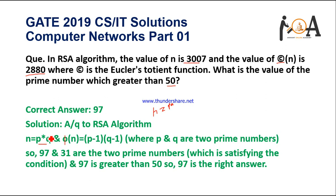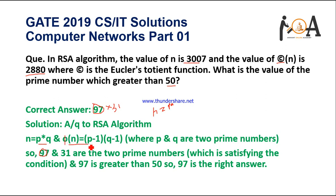Checking the series of prime numbers, if 97 × 31 = 3007. So 97 and 31 are the prime numbers satisfying the RSA condition. Applying the totient function, (P−1)(Q−1) = 96 × 30 = 2880, which also satisfies the condition. Since the question asks for the prime greater than 50, the answer is 97.